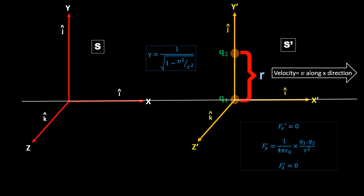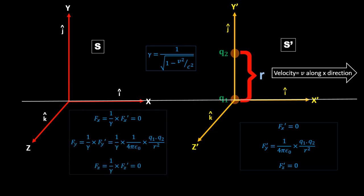In S frame, every force is defined by multiplying (1/gamma) into the force in S prime. So Fx = (1/gamma) · Fx prime = 0, Fy = (1/gamma) · Fy prime = (1/gamma) · (1/4πε₀)(q1·q2/r²), and Fz = 0.